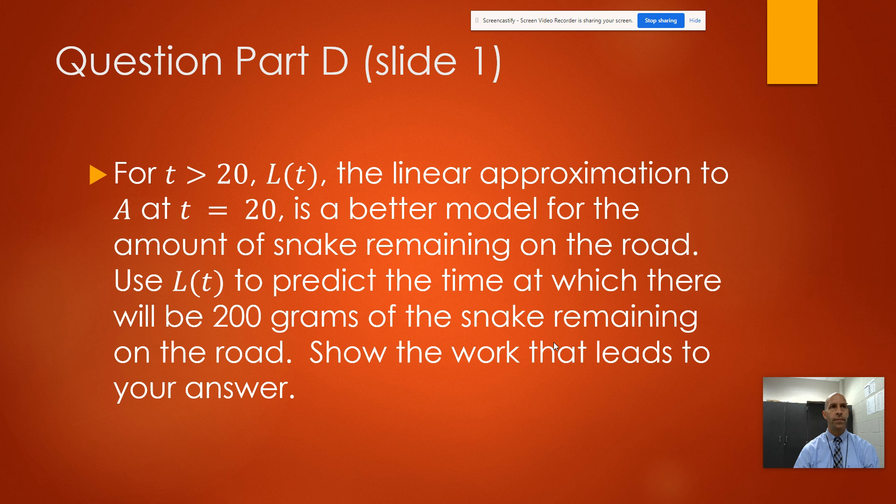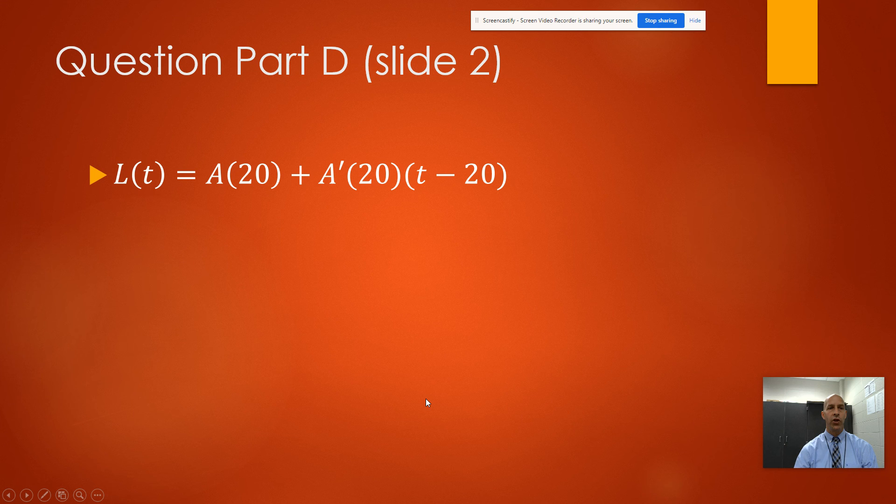This one's going to be out of four points. First point: you've got to find the linear expression to represent this, to model this. Remember, L(t) - we're going to use y equals mx plus b. Our slope is A'(20), and then we've got x minus 20.